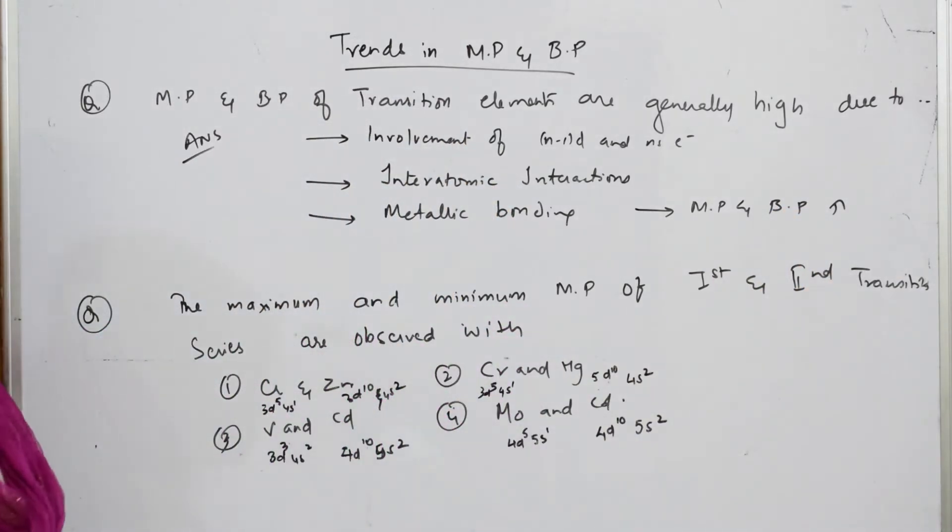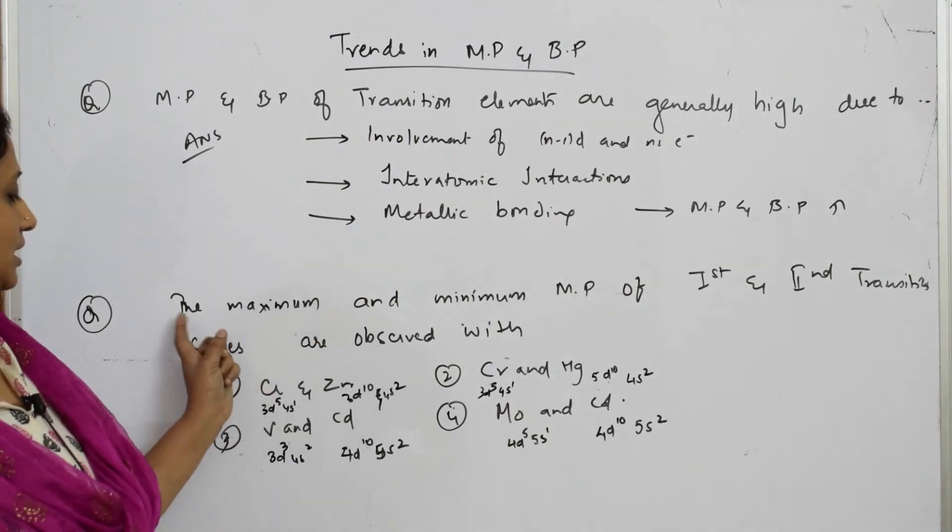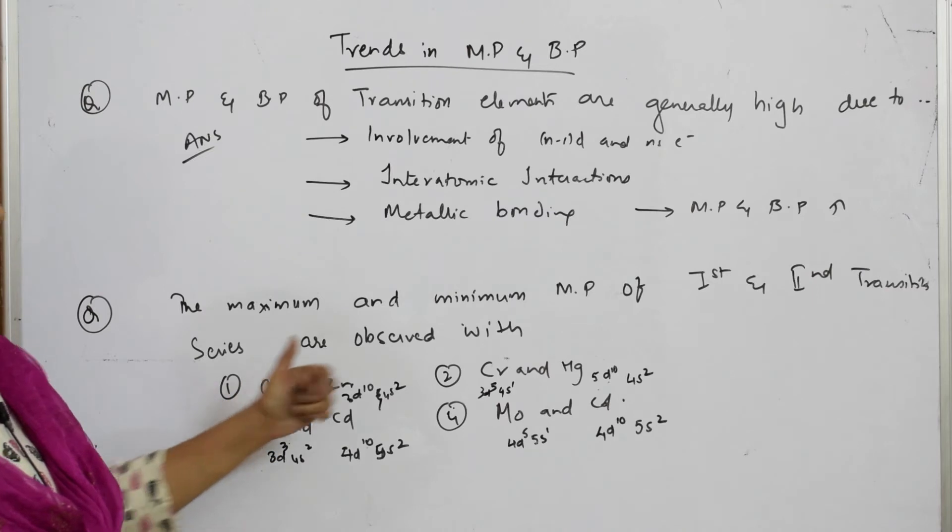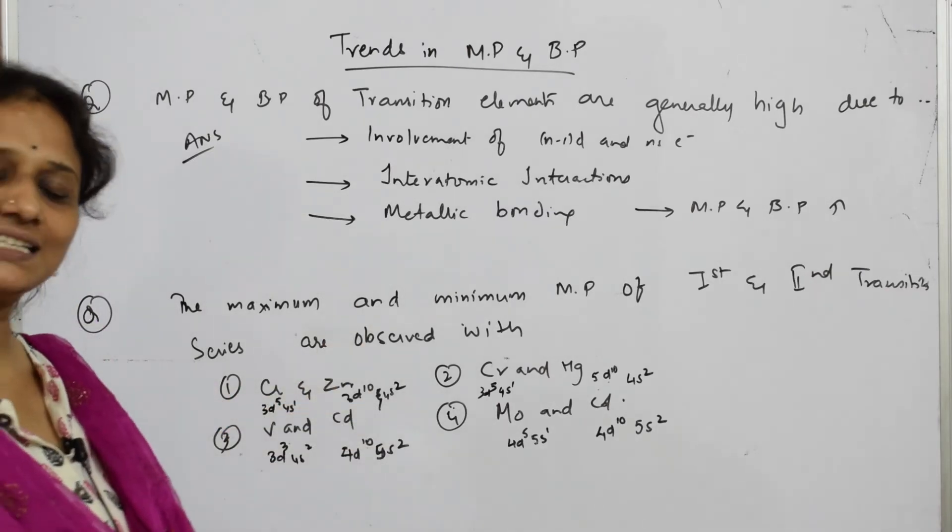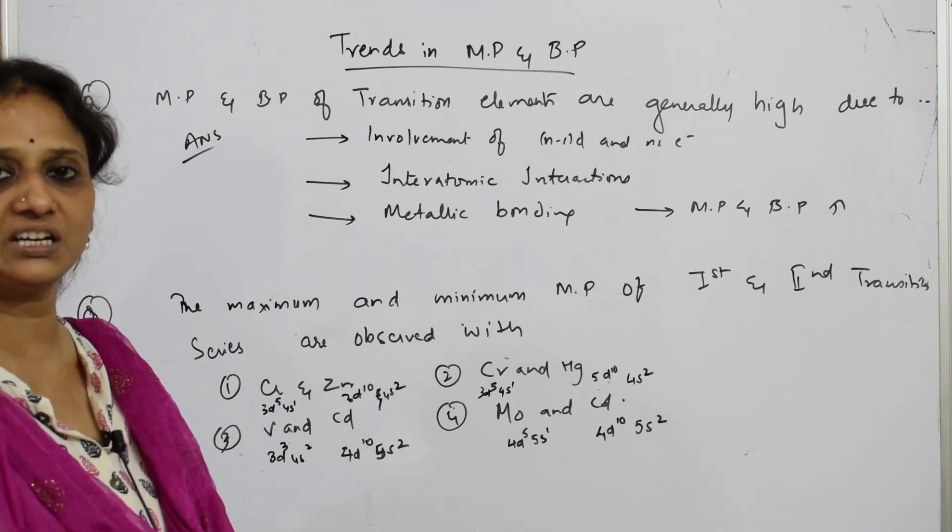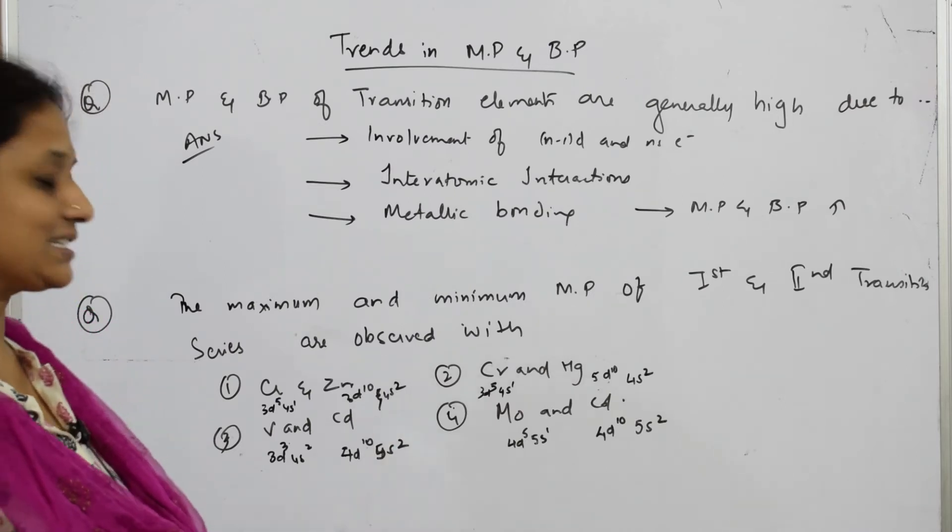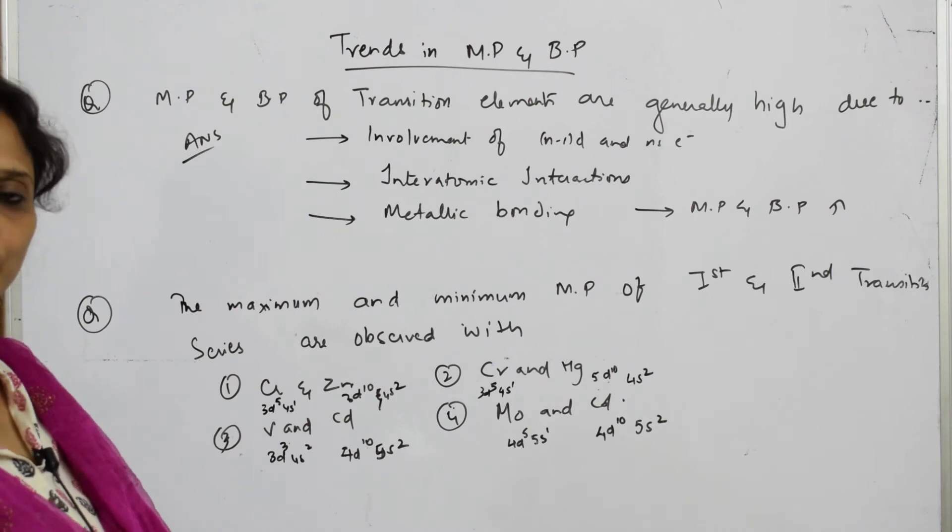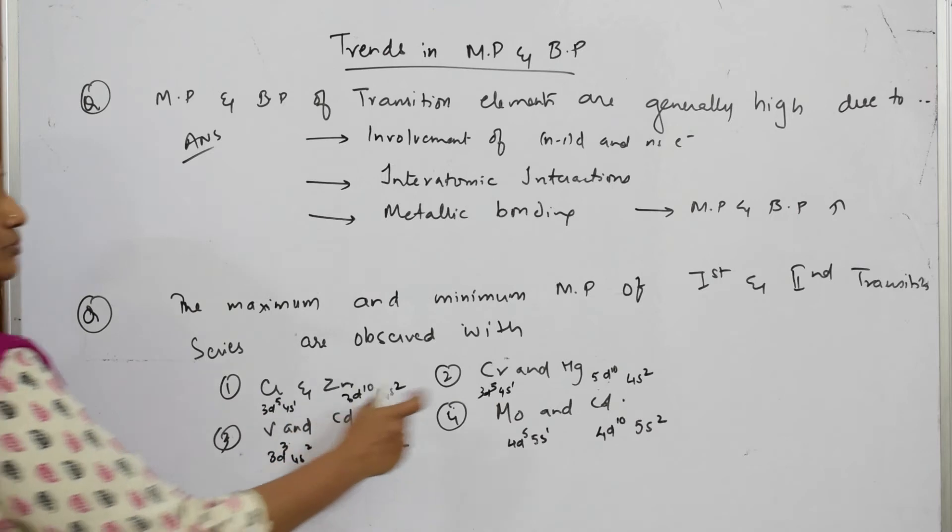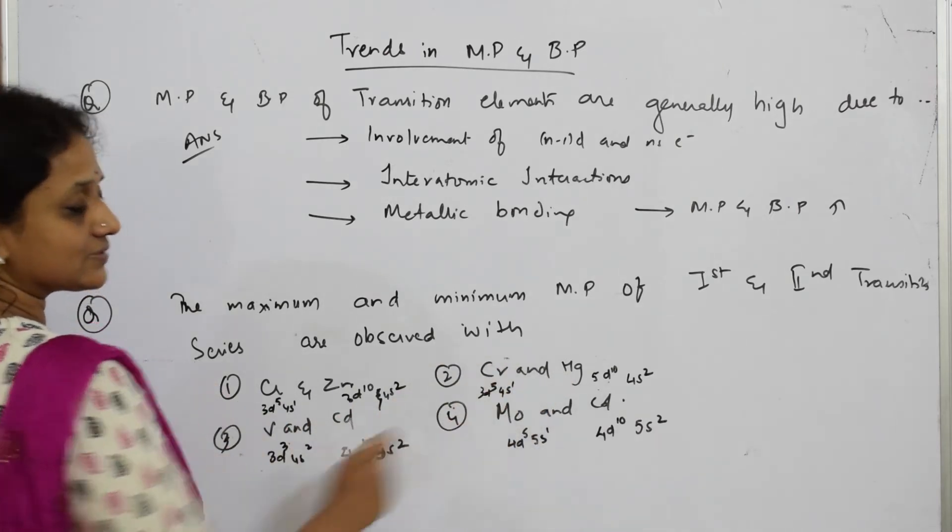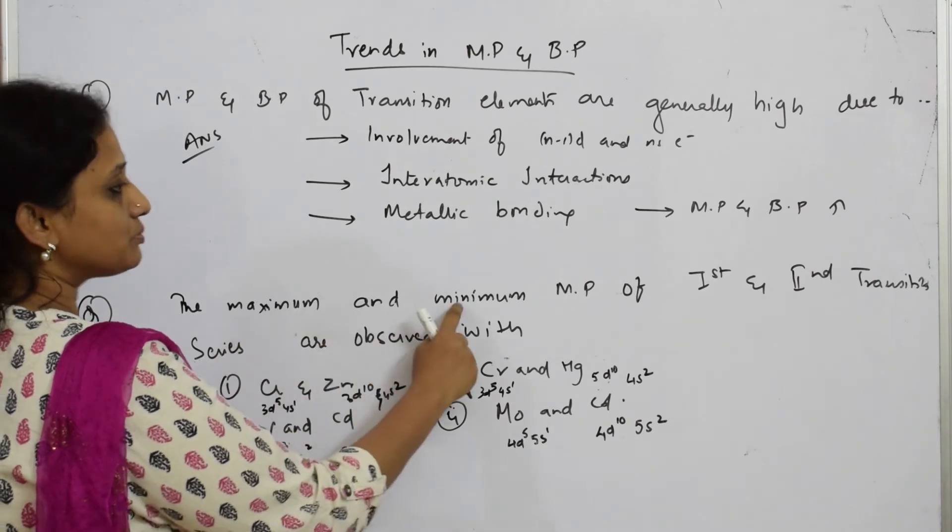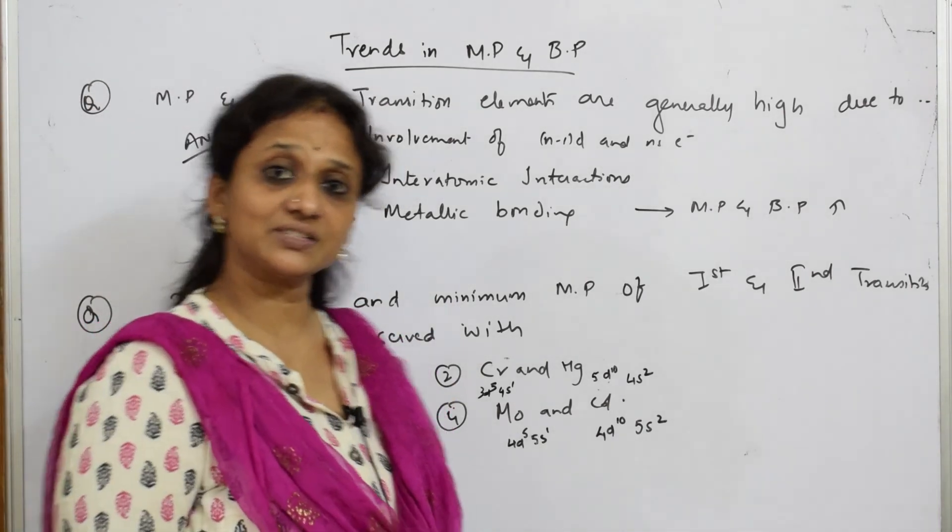Let us come back and see this question. The maximum and minimum MP of first and second transition series elements are observed with - I felt this MCQ is a bit tricky and very nice. I found it in one of the competitive books. This will be useful for you as practice. Let me see - I have to find in these sets. Remember, first should be maximum, then should be minimum for the first and second transition series.